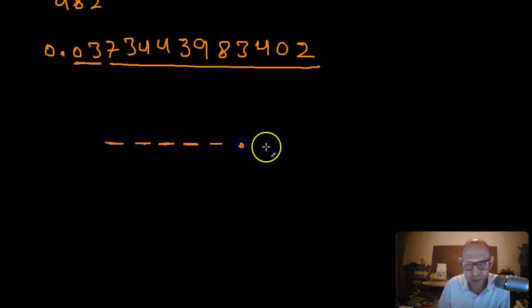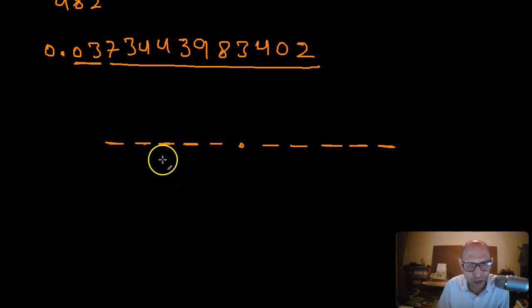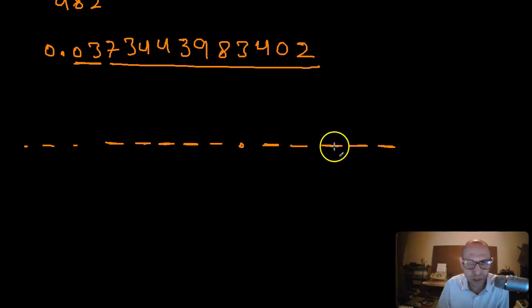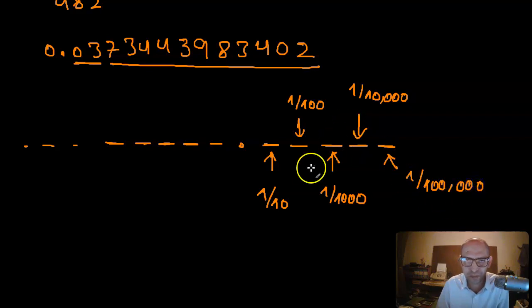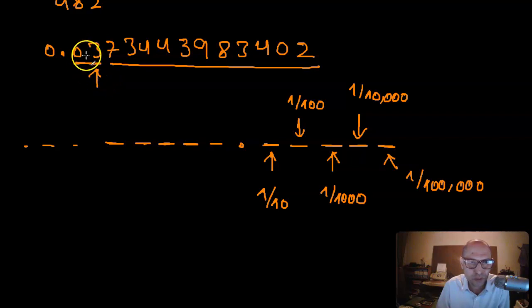The place values after the decimal point are: one-tenth, one-hundredth, one-thousandth, one-ten-thousandth, one-hundred-thousandth, and so on. I want to round my number to the one-hundredth place value.